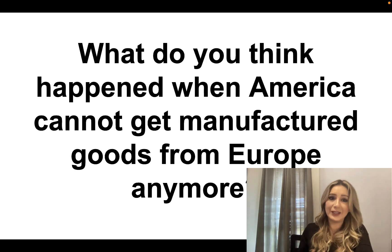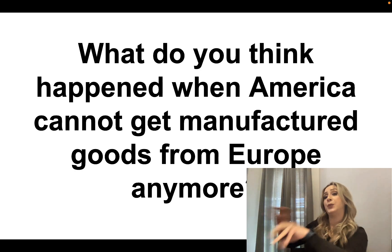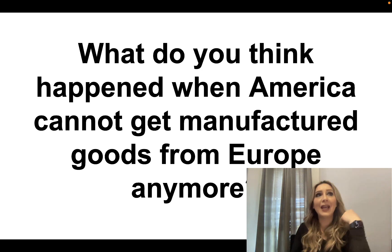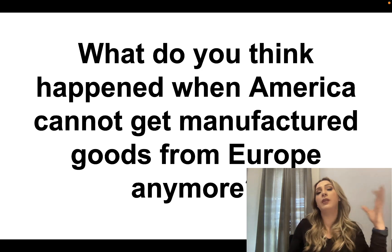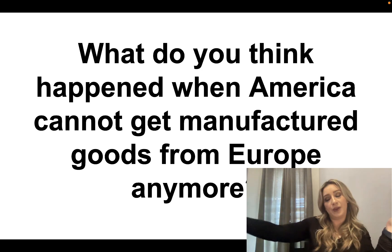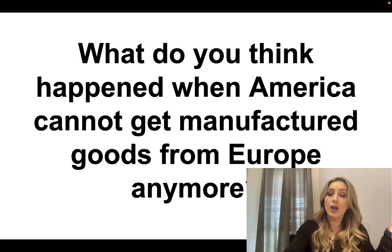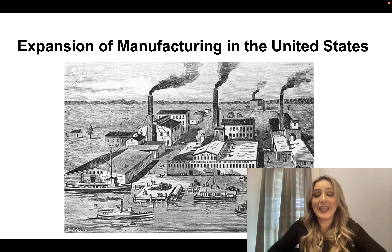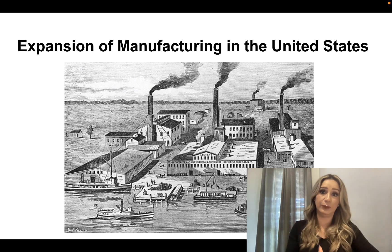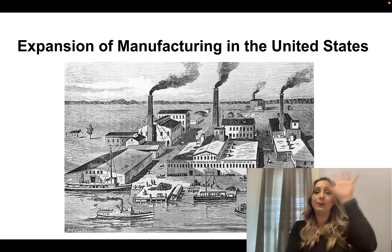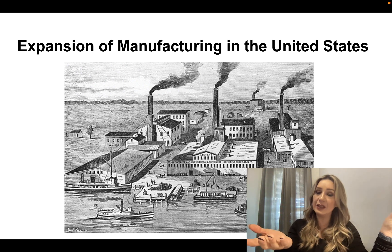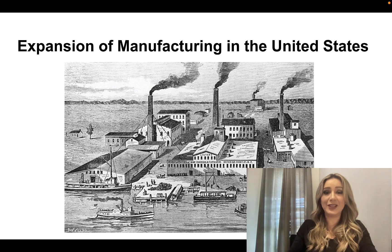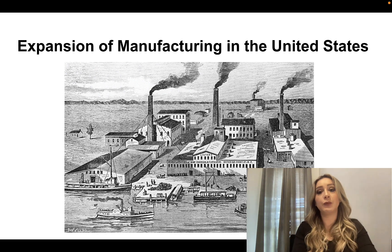What happened when America cannot get manufactured goods from Europe? Not only can we not export — we cannot import goods either. Some of the main goods we're importing are manufactured goods. We don't have all of those manufactured goods domestically. So when we cannot get them, we end up saying we need those goods and we start to manufacture them ourselves. This increases our domestic manufacturing. So what ended up being a negative effect now turns into a positive one — there's an expansion of manufacturing. We start learning how to produce our own goods.